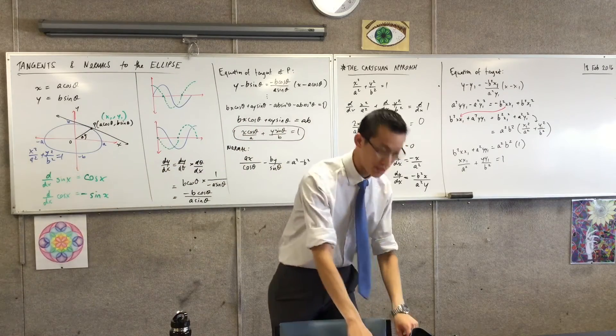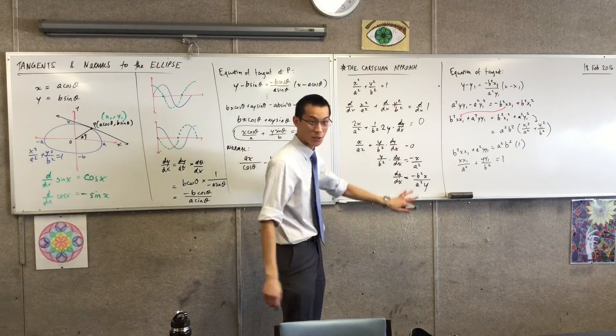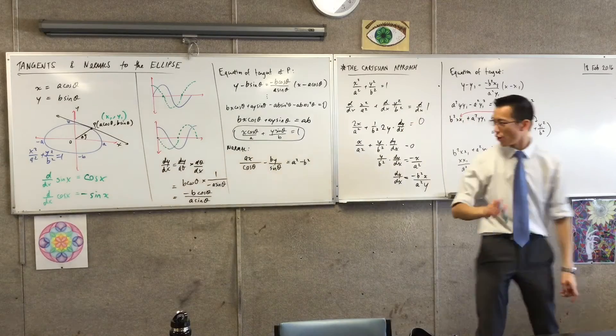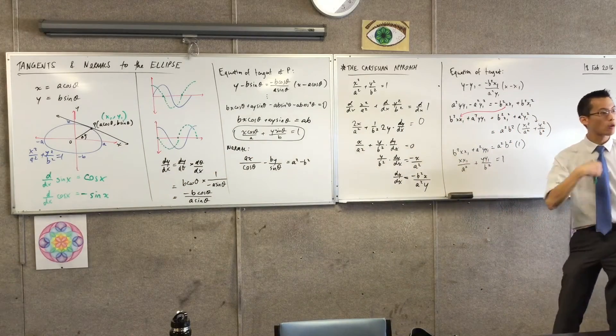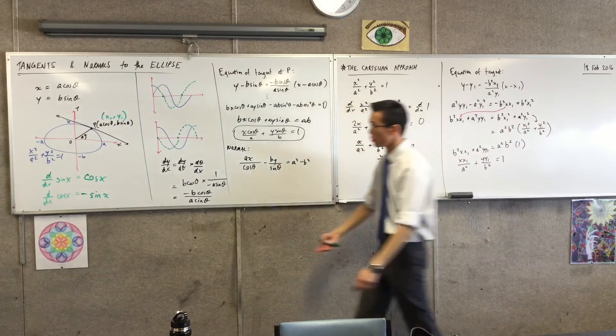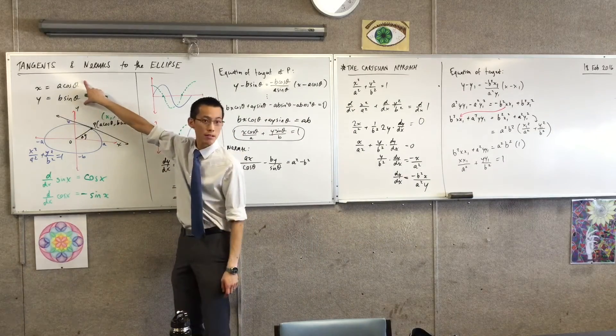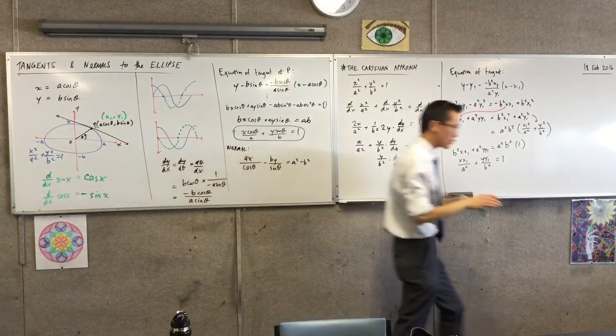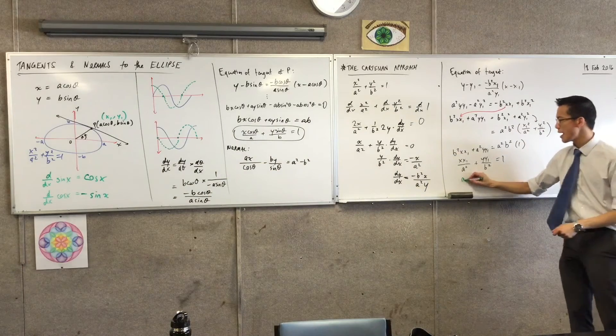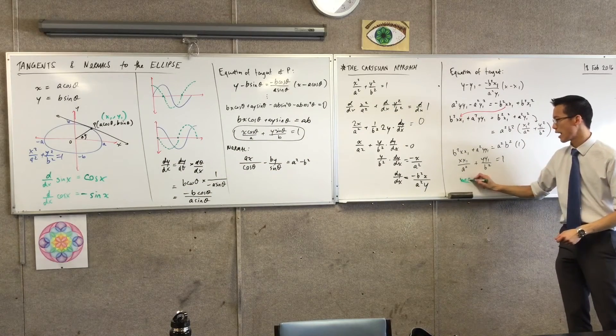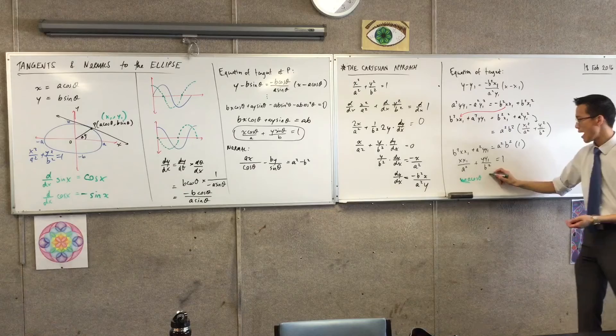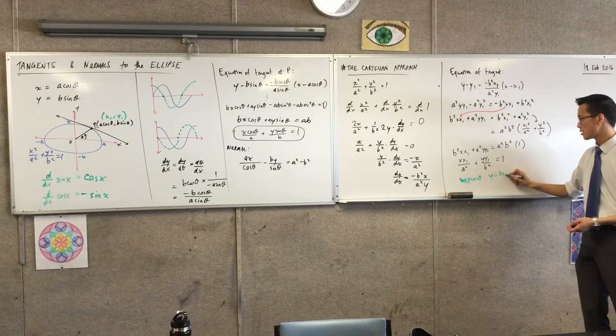Now, just to verify that we haven't just done some algebraic screw-up, remember, I know that x₁ and y₁ were just my alternative labels for these guys. Remember that? Like, they're the same thing. So let's just see what happens. What if x is equal to a cos theta, and y equals b sine theta.